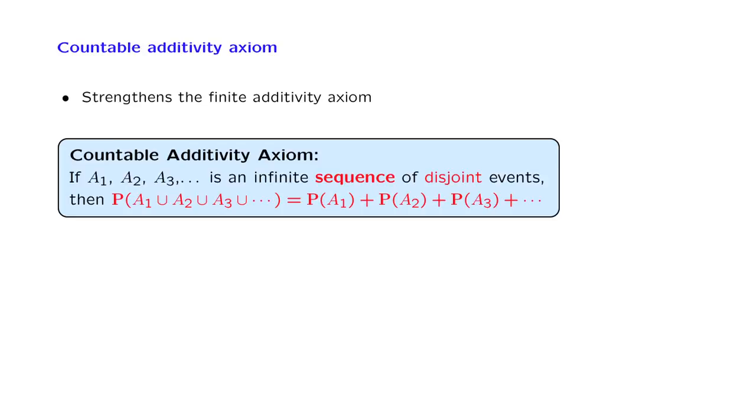The axiom that we introduce is the following. If we have an infinite sequence of disjoint events, as for example, in this picture, we have our sample space,